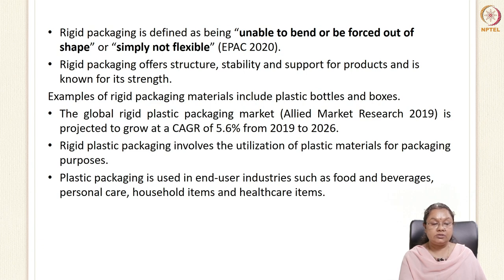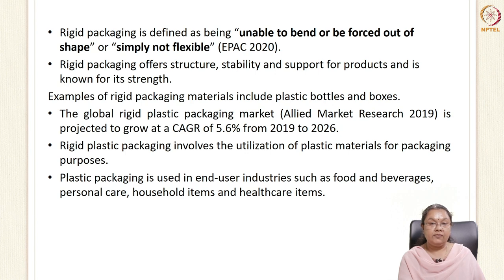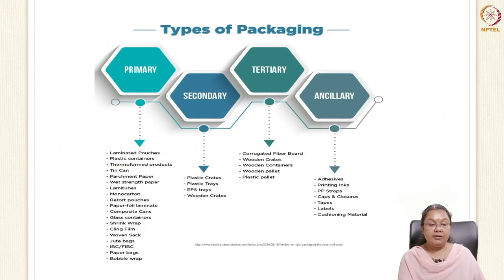Rigid packaging is a structural component — it contributes to structure, is highly stable, and supports the product. Its main property comes from its strength. The global rigid packaging market was projected to see 5.6% growth from 2019 to 2026, showing great demand. It involves utilization of plastic materials and finds application in food and beverages, personal care, household items, and healthcare. It can be part of primary, secondary, or tertiary packaging.